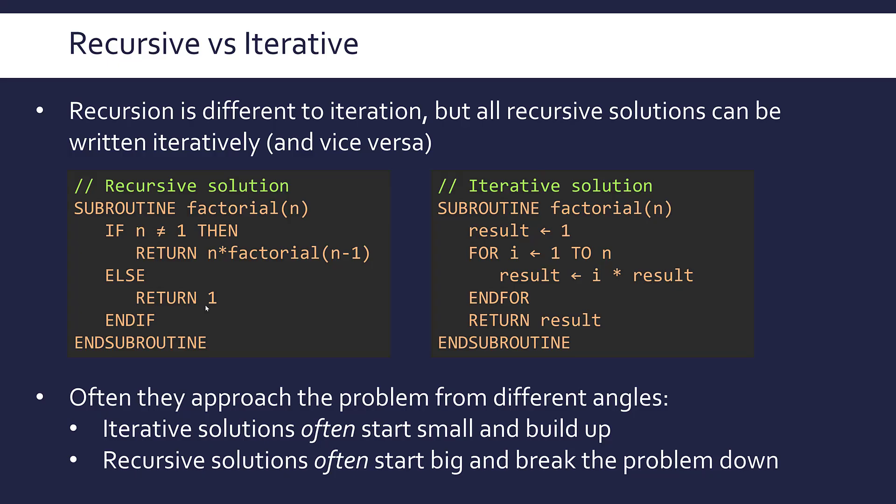If you ever look at an iterative solution for merge sort, which is bottom-up, I think it's much more confusing because it kind of goes against the nature of what merge sort is doing. Merge sort is trying to break down a problem, so it fits better, in my view, with recursion than iteration. But ultimately both do the same job — it's just what approach you're taking to solve it.